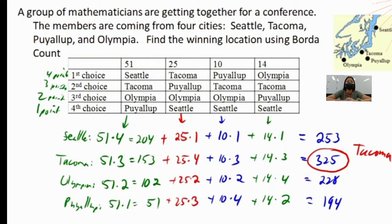In the Borda Method, we will use a table with voters and first, second, third, and fourth choices. For 51 votes: Seattle, Tacoma, Olympia, Puyallup. For 25 votes: Tacoma, Puyallup, Olympia, Seattle. For 10 votes: Puyallup, Tacoma, Olympia, Seattle. And for 14 votes: Olympia, Tacoma, Puyallup, Seattle.